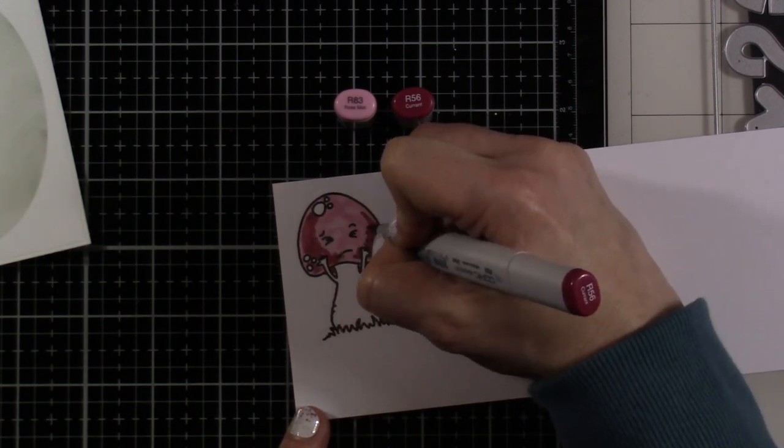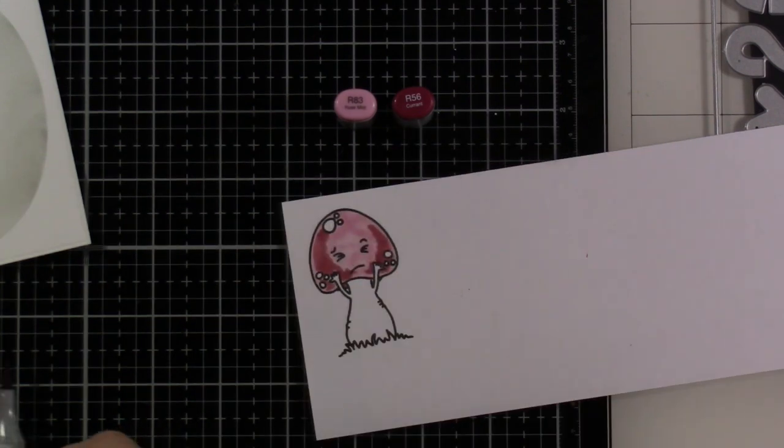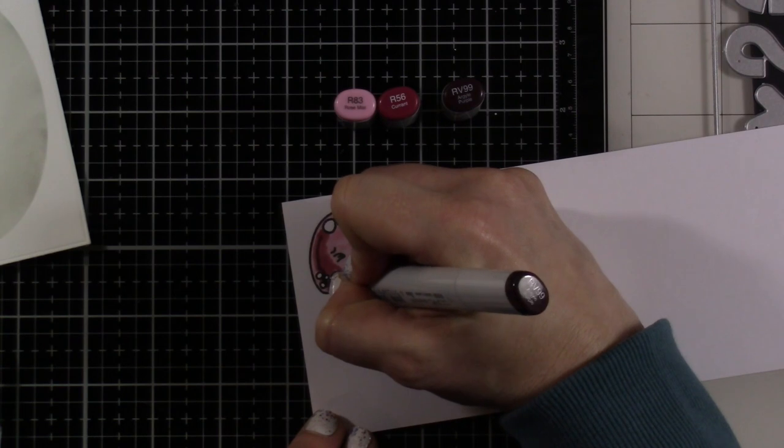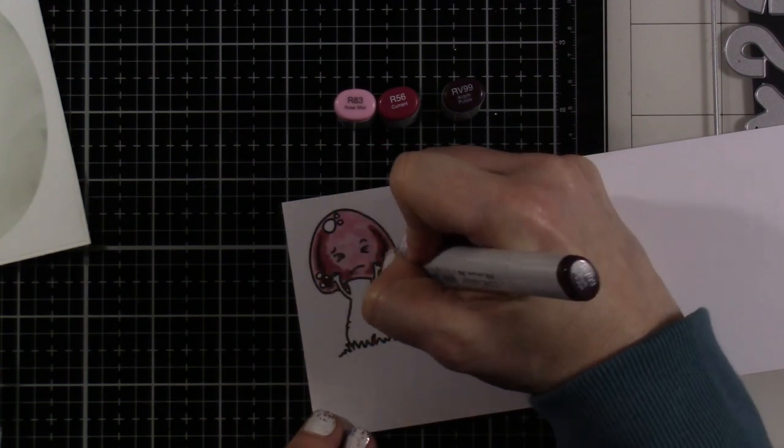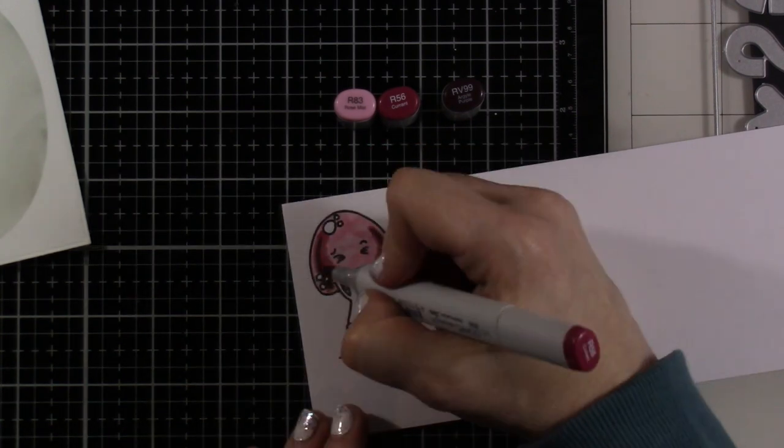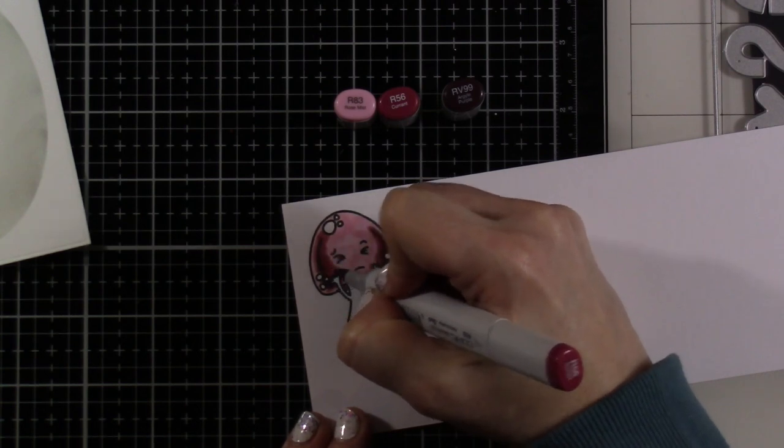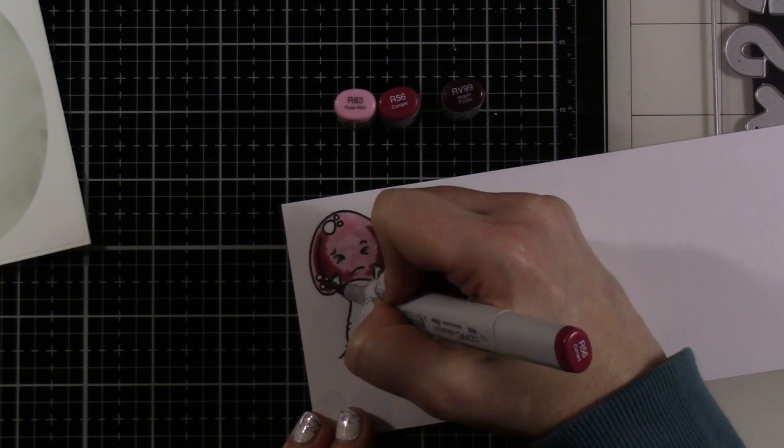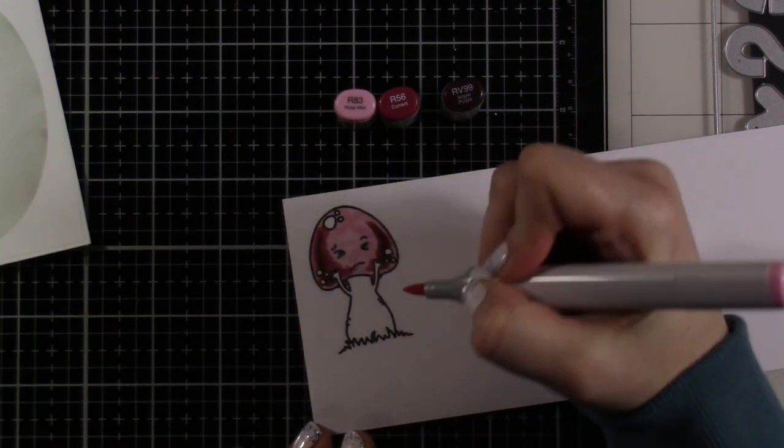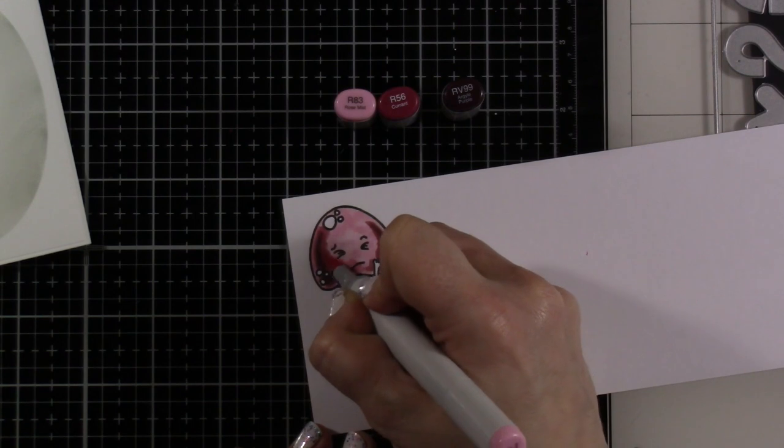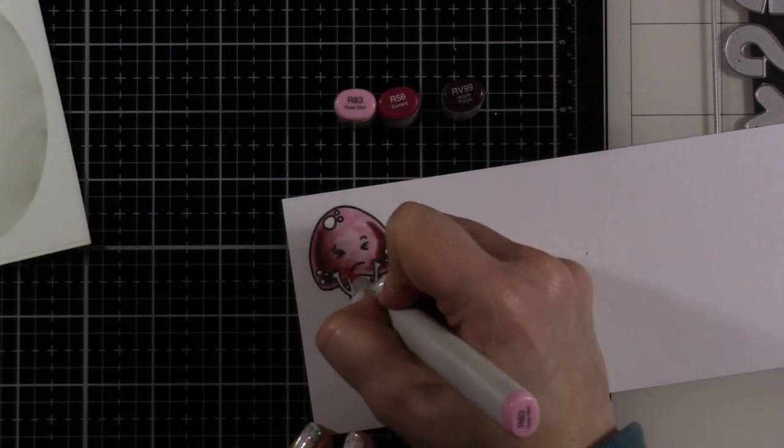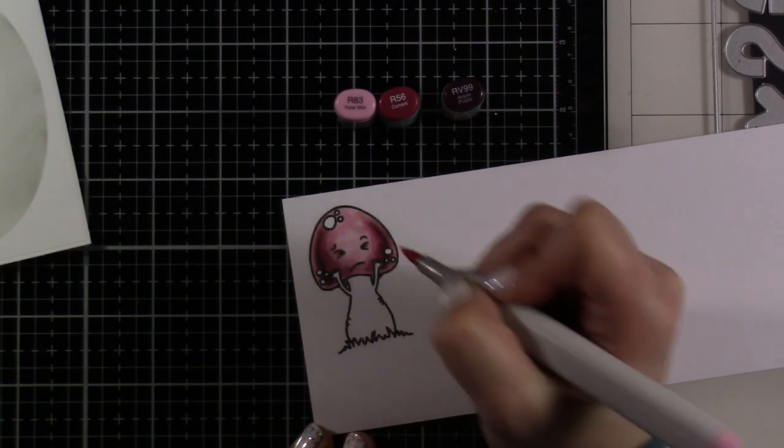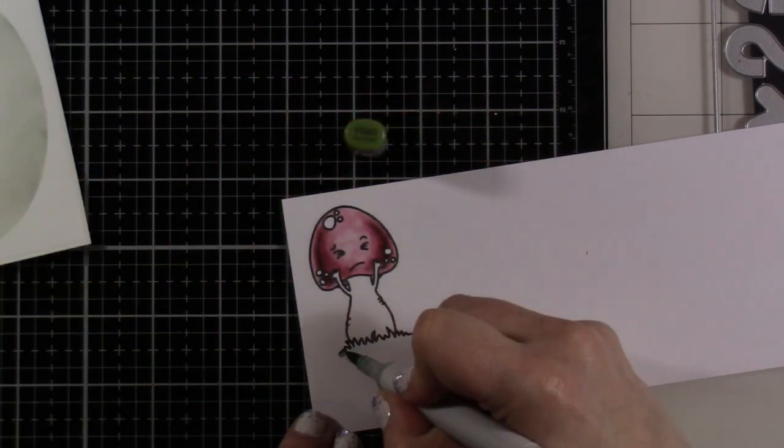It looks very harsh when you're looking at it there because I haven't blended out yet. And then I bring in an even darker color, which is the RV99. That is very dark, but I end up loving how this looks. I bring back in the R56 to blend out the RV99 a little bit. And then when I bring in that R83 and blend even more, it looks so much better. I actually love how drastic the color change was from that R83 all the way to the RV99.